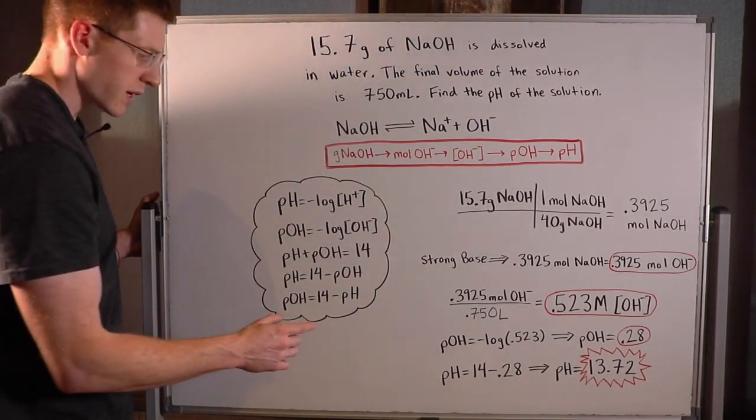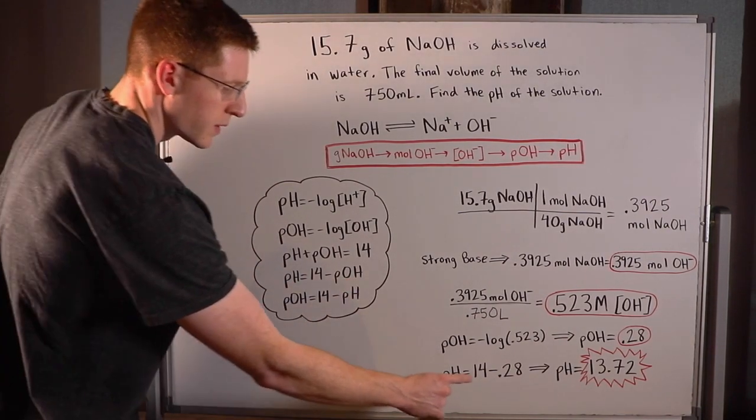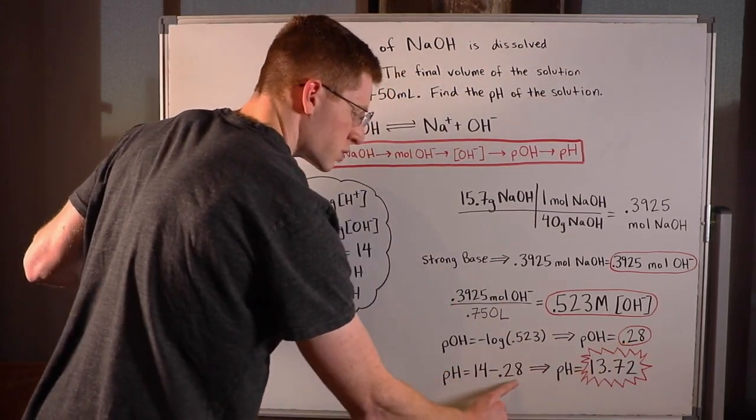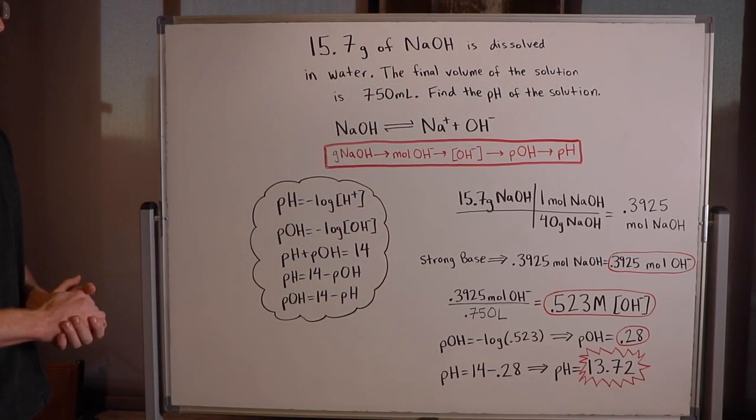Finally, it's very easy to take pH equals 14 minus pOH and use this equation to find the pH. So pH equals 14 minus the pOH, which was 0.28, and you get a final pH of 13.72.